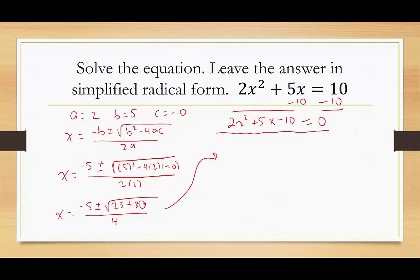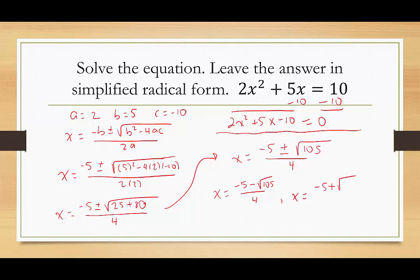We get x equals negative 5 plus or minus the square root of 105 over 4. Now the square root of 105 does not have any perfect square factors besides 1, so we cannot simplify it, and therefore we can't simplify the fraction in general. So this one has two solutions: x equals negative 5 minus the square root of 105 over 4, and x equals negative 5 plus the square root of 105 over 4.